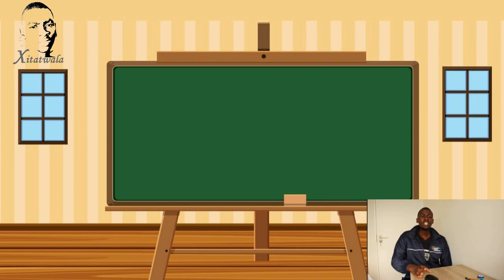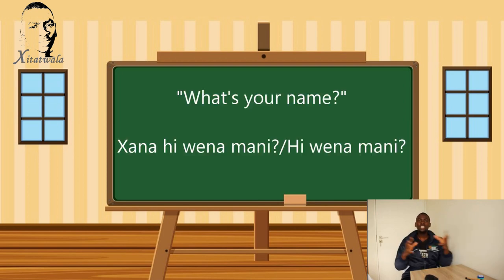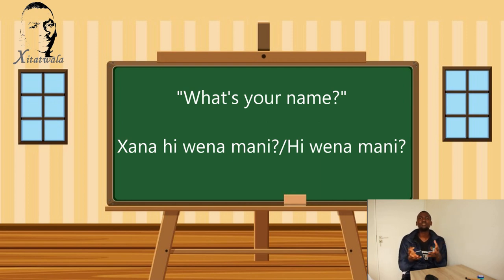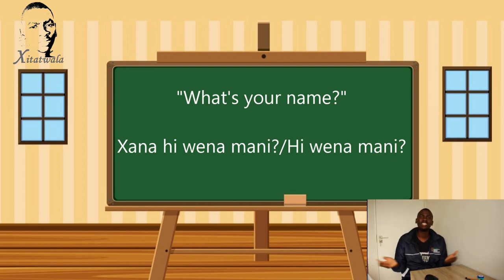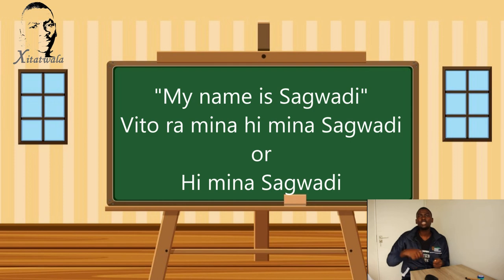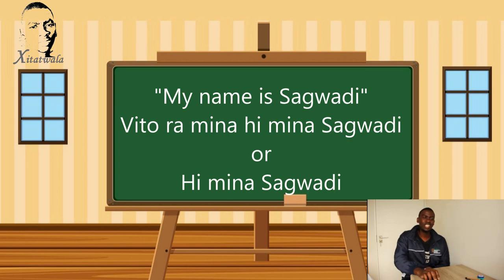When you meet someone and want to ask their name, you can simply say 'Shana vitora wena imina?' or the shorter version, 'Shana wena imina?' — that means 'What's your name?' The person will respond by saying 'Vitora mina imina Sagwadi' — that means 'My name is Sagwadi.'